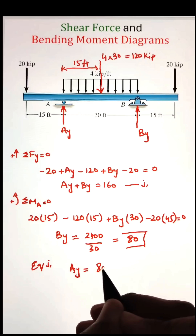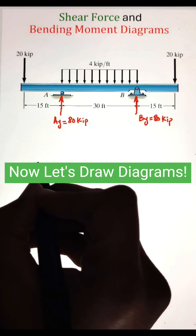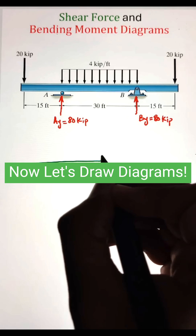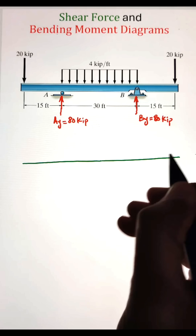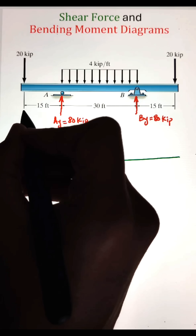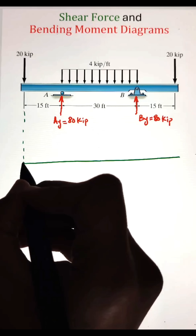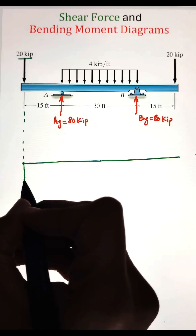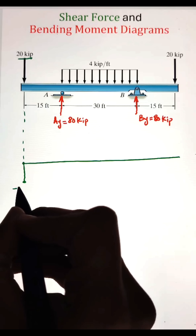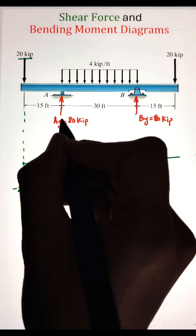Next, let's draw the free body diagrams. To draw the shear force diagram, we can utilize the loads acting on the beam. To start, we have a 20 kip load acting vertically downward, which will cause a jump down from 0 to negative 20 on the shear force diagram. Next, we have a support reaction of 80 kips that will cause a jump up from negative 20 to 60 kips.